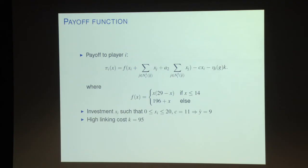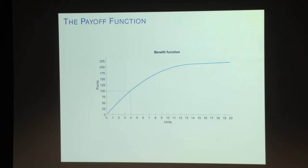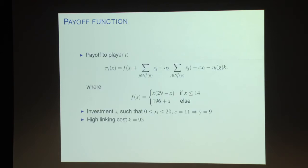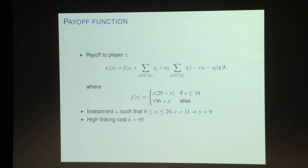At the start of every round, people are randomly assigned an identity number, so across rounds they are mixing. Let me give you an example of the f function — the returns function. With this returns function and a cost c of buying information, substituting c into the function and solving for y-hat gives nine. So that's the equilibrium prediction, and remember this does not depend on the number of subjects — it's always going to be nine. The cost of linking is 95, which is pretty high, meaning I only want to form at most one link. The f function is concave below 14 units of effort and linear above 14.